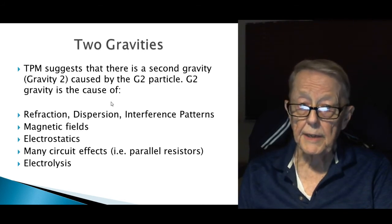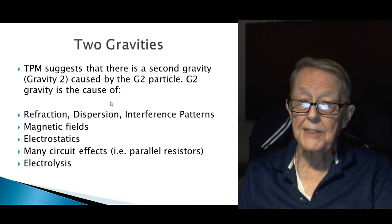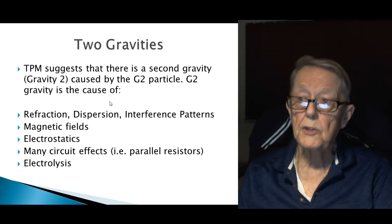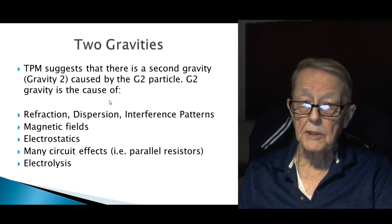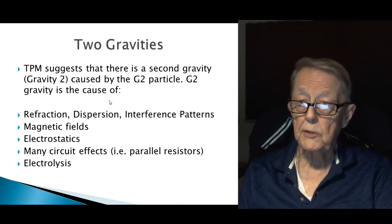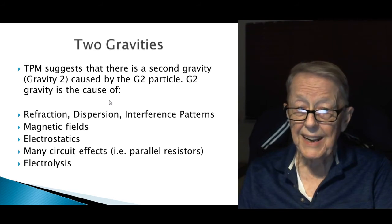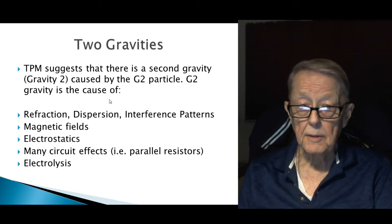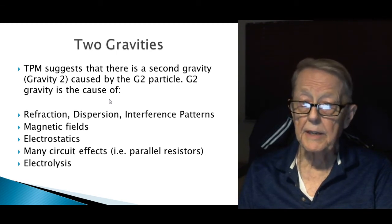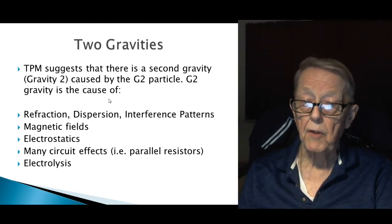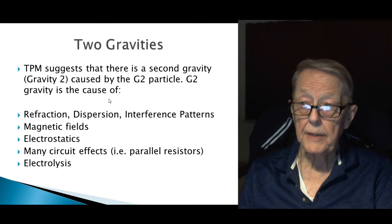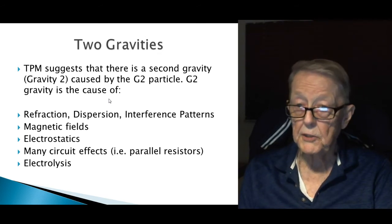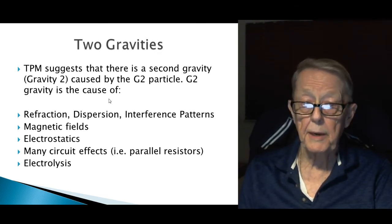There are also two gravities. TPM suggests that there is a second gravity. First gravity is Newtonian gravity caused by the G1 particle, but there's a second gravity caused by the G2 particle, and it's a busy little field of particles. For light, it causes refraction, dispersion, and when properly set up, it will cause interference patterns.